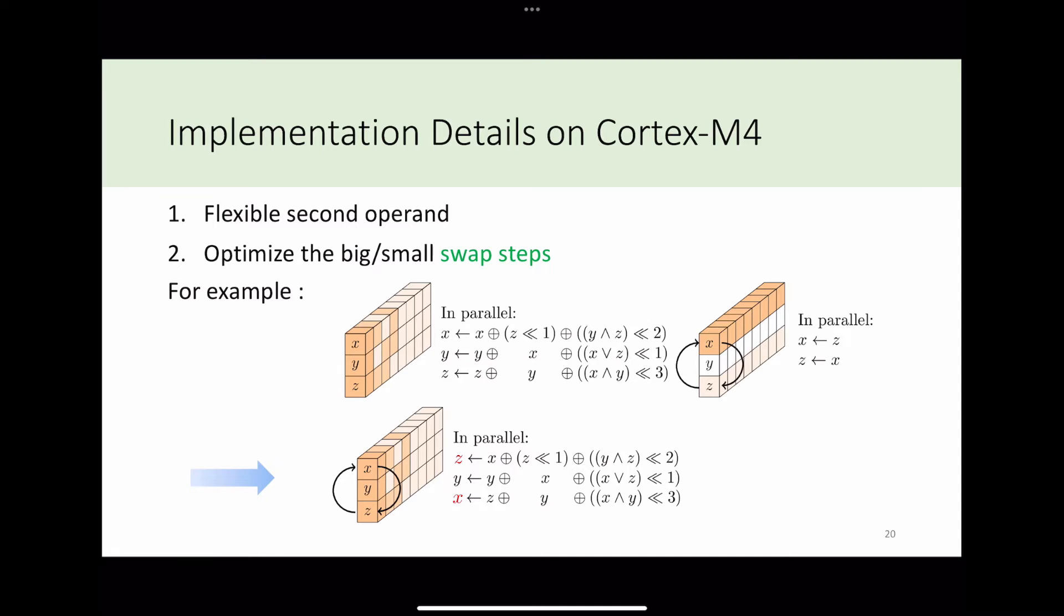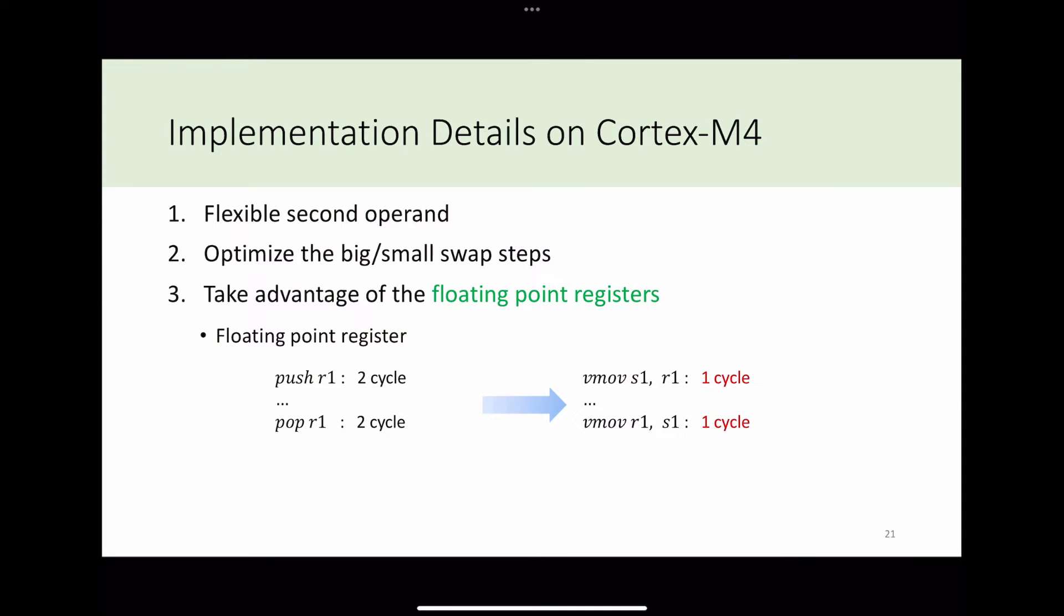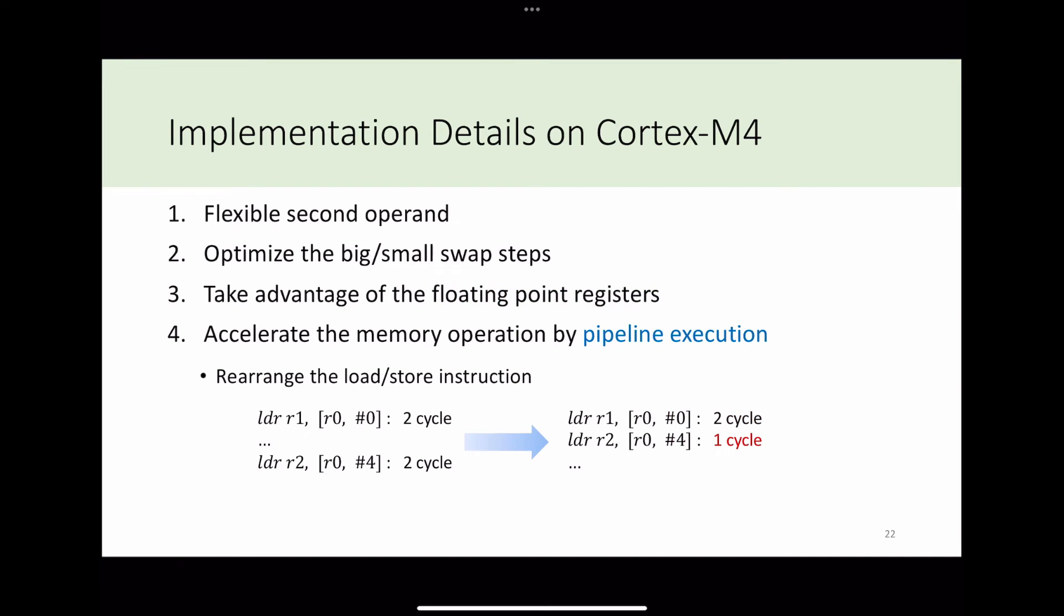After our optimization, a swap step can be eliminated. We also take advantage of floating-point registers, which can be viewed as faster memory. Temporary values can be moved to floating-point register and moved back to general register when needed. Cortex-M4 can accelerate the memory operation by pipeline execution when the load-store instructions are concatenated. So, we can rearrange the structure to concatenate the load-store instructions and accelerate our memory operations.